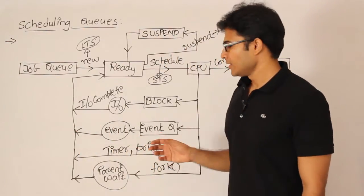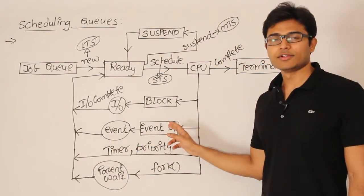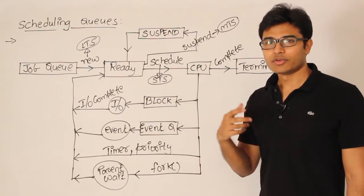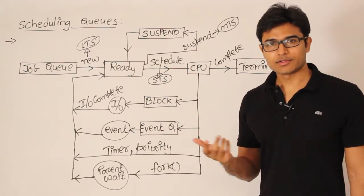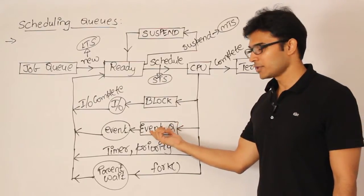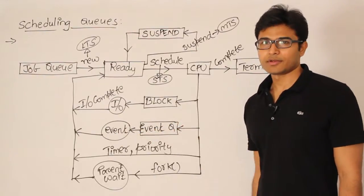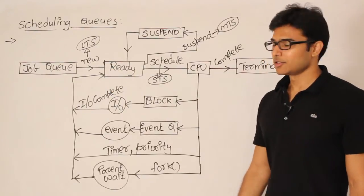Just now understand that there are some events which a process will need to finish before it can continue execution. Then it is going to wait in the event queue for something to happen. And after that again it is going to get back into the ready queue.